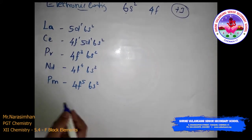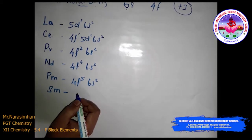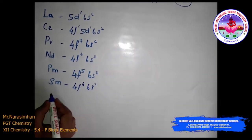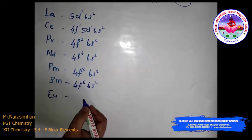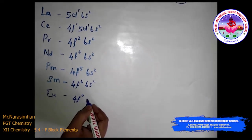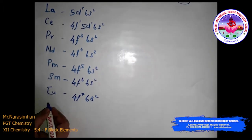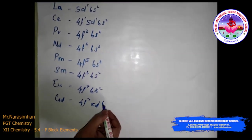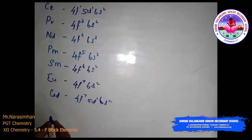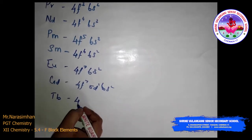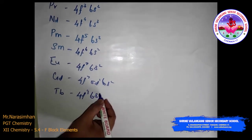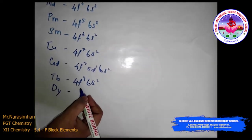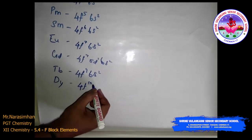Samarium (Sm) has 4F6, 6S2. Europium (Eu) has 4F7, 6S2. Gadolinium (Gd) has 4F7, 5D1, 6S2. Terbium (Tb) has 4F9, 6S2. Dysprosium (Dy) has 4F10, 6S2.